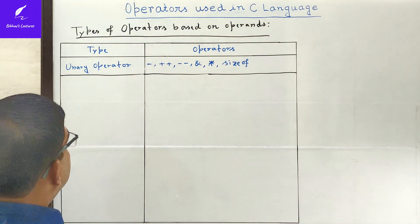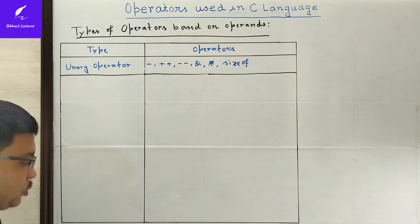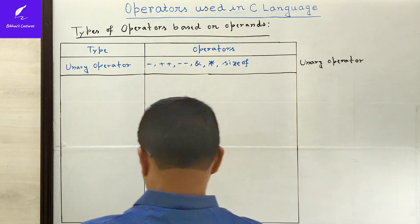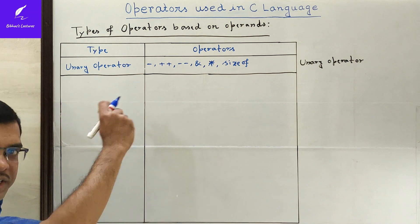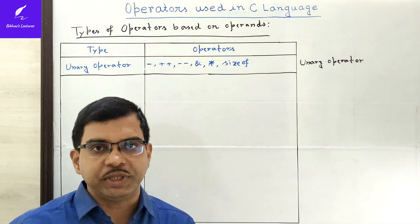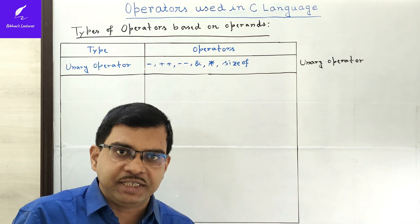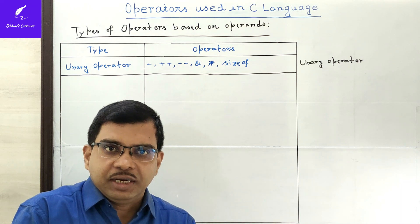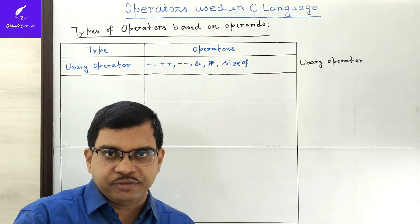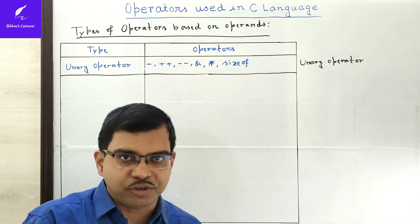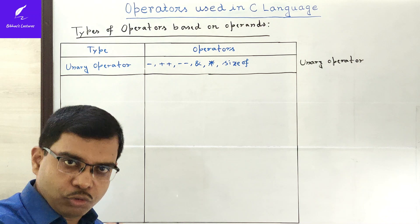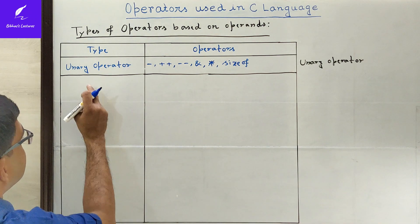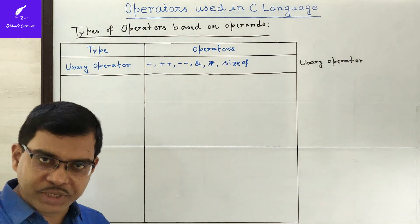Next is the binary operator. 'Bi' means two — this type of operator can only operate when two operands are present. It cannot operate on a single operand; at least two operands are required. That is why they are called binary operators. There are different types of binary operators.